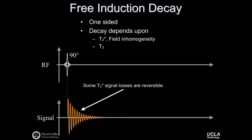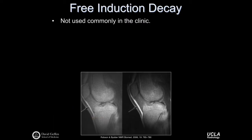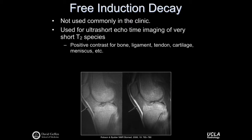We'll talk about that in the context of echoes shortly. The free induction decay, although the most elementary and simple NMR signal, is not commonly used clinically. It can be used for ultra-short echo time imaging of very short T2 species. Some tissues, especially solid tissues — ligaments, tendons, meniscus, and so forth — can actually have positive contrast, that is, signal intensities above the noise floor. Using free induction decay imaging, it's possible to get positive contrast for tissues like bone, ligament, tendon, cartilage, and meniscus.